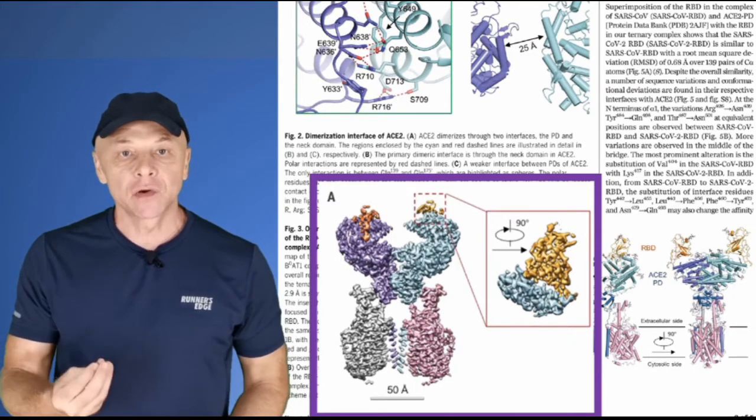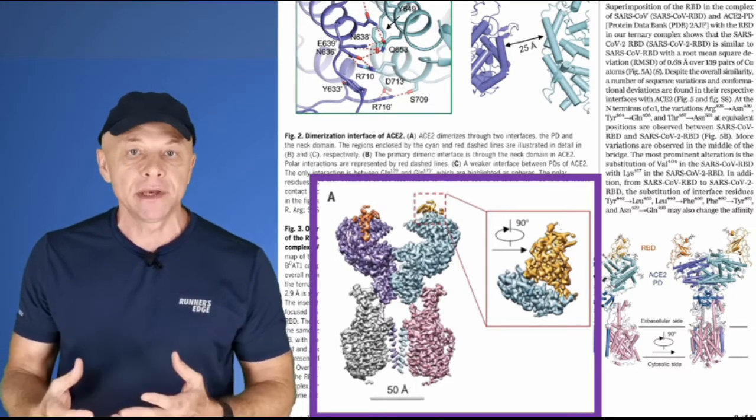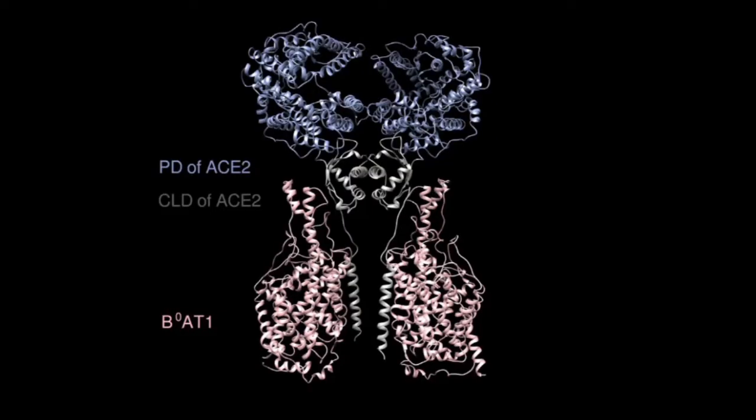as well as a ternary complex with the receptor-binding domain, or RBD, of SARS-CoV-2. The ACE2 complex exists as a dimer that is reflected in this picture as the left-to-right symmetry.